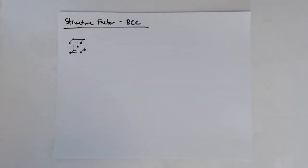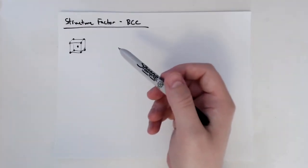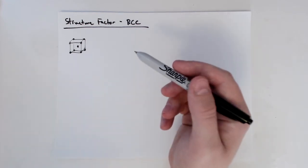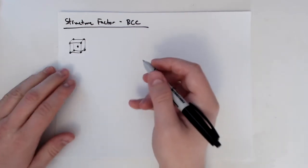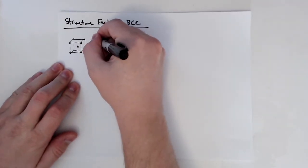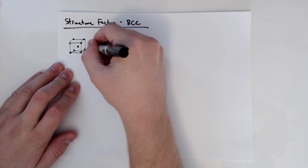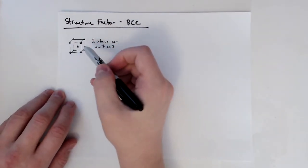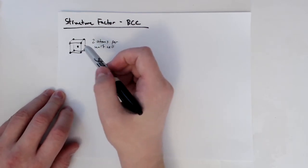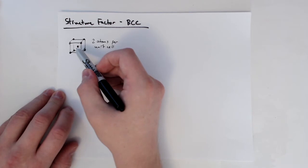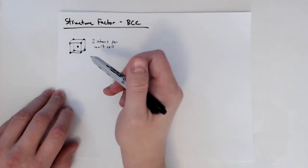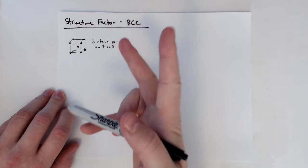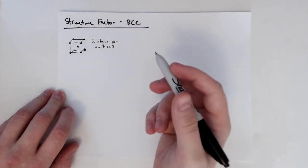We're going to go through an example using the structure factor, specifically looking at the BCC structure. We want to calculate the structure factor for BCC, and we know it has two atoms per unit cell. We need to account for both atoms in the structure factor calculation.